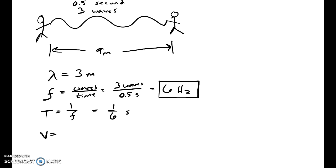And if we want that velocity, I can do wavelength times frequency, and that's 3 meters times a frequency of 6 hertz. So that would be a velocity of 18 meters per second. I could have also done wavelength over period, and that would have been 3 over 1 sixth, and I still would have gotten 18 meters per second. Either way I do it.